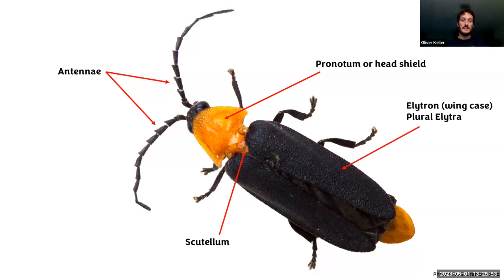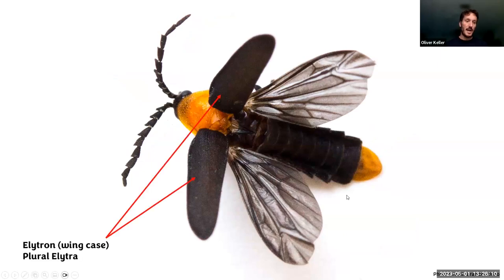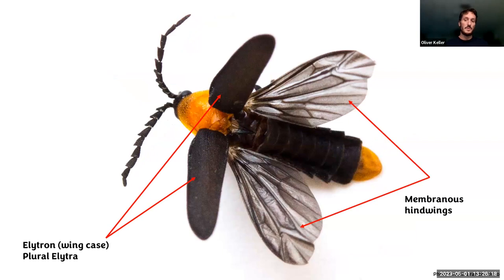The arrow points at one half of the elytra, called an elytron or wing case — the hardened forewing that protects the membranous hind wings. The elytra are held up when the firefly flies, but they don't use them to fly — they use the membranous hind wings to fly.